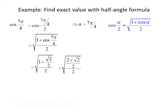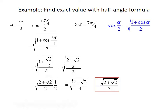From the unit circle, cosine of 7 pi over 4 equals root 2 over 2, giving us the square root of 1 plus root 2 over 2, all divided by 2. Rewriting 1 as 2 over 2, the numerator becomes 2 plus root 2 over 2, still divided by 2. Multiplying by the reciprocal gives the square root of 2 plus root 2 all over 4. Taking the square root of numerator and denominator gives us the square root of 2 plus root 2, divided by 2.